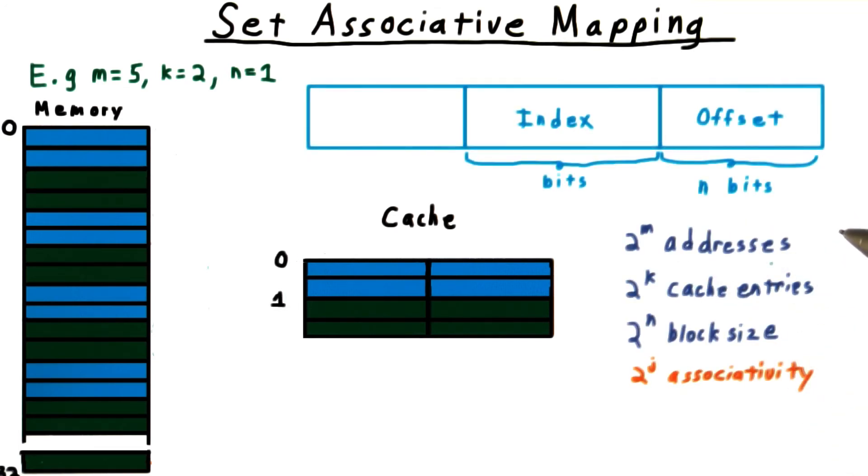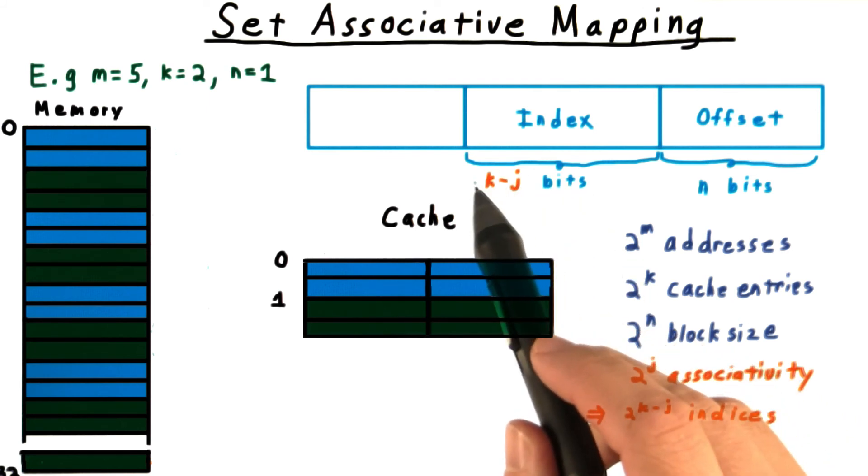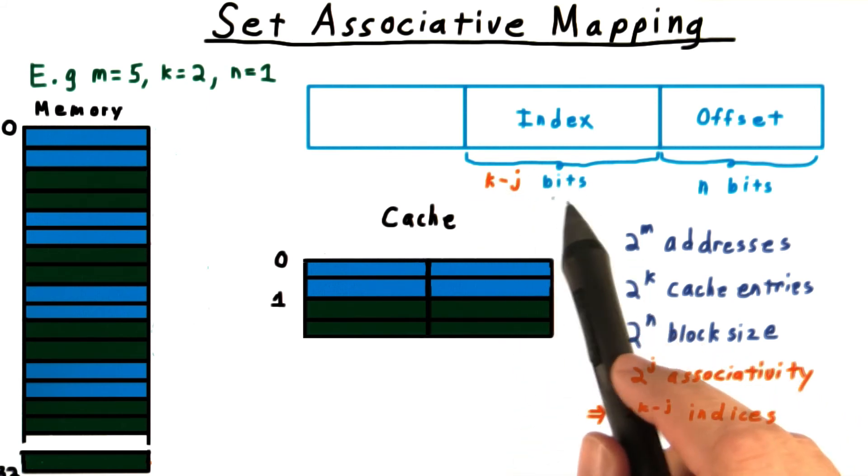Returning to our general notation, we now say that we have 2 to the j associativity. This means that we only have 2 to the k minus j indices into our cache, and the index is really only k minus j bits long now.